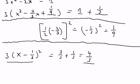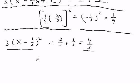So now I've got to divide through by 3, because I want to isolate my x minus 1 third squared on one side. So if I divide both sides by 3, I get x minus 1 third squared equals 4 ninths.